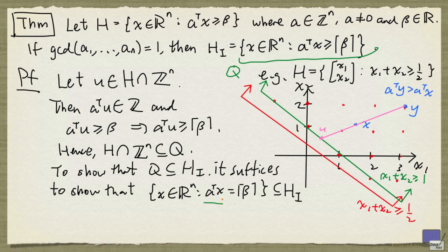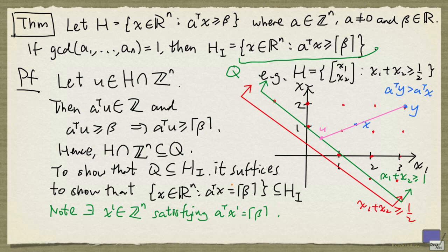Because the coefficients of x are relatively prime, and the ceiling of β is an integer, we know that there has to be an integer solution to this.